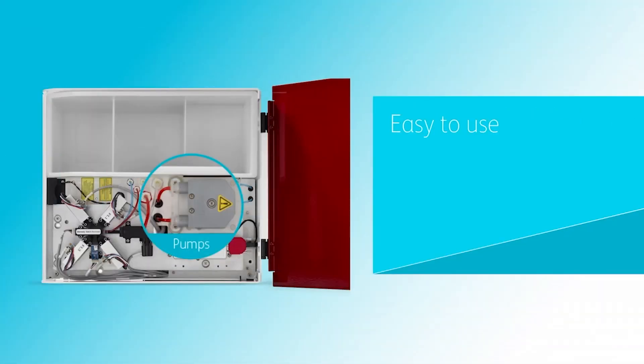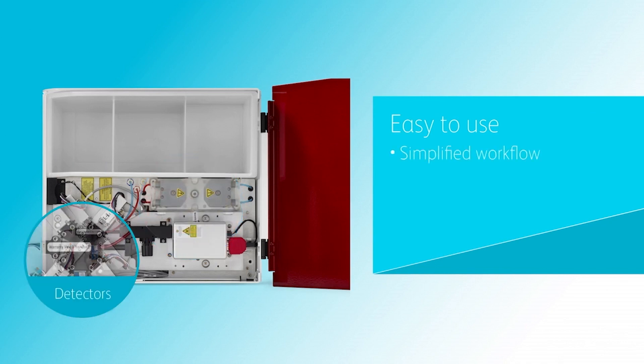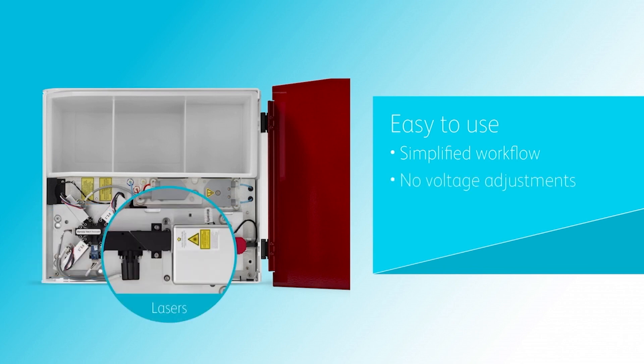The BD Accuri C6 Plus features compact optical design, fixed alignment, and pre-optimized detector settings that eliminate the need for voltage adjustment.